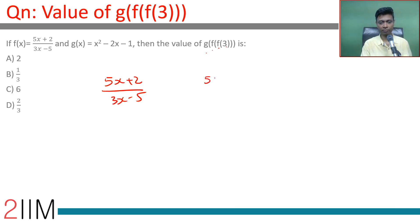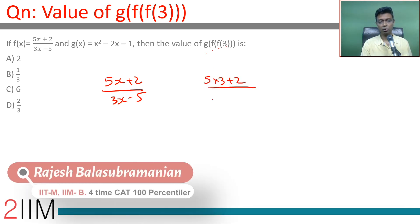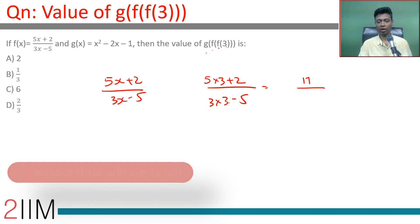f(3) first: 5 into 3 plus 2 by 3 into 3 minus 5. 15 plus 2 is 17, by 9 minus 5 is 4. So that is f(3) equals 17 by 4. Now I'm going to find f(f(3)), or f(17 by 4).